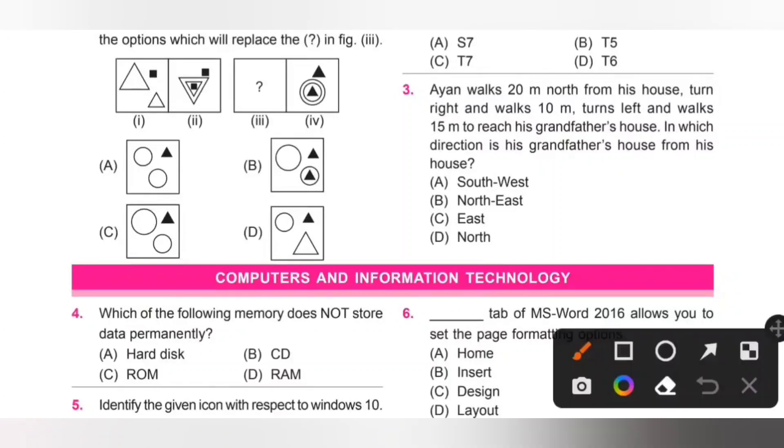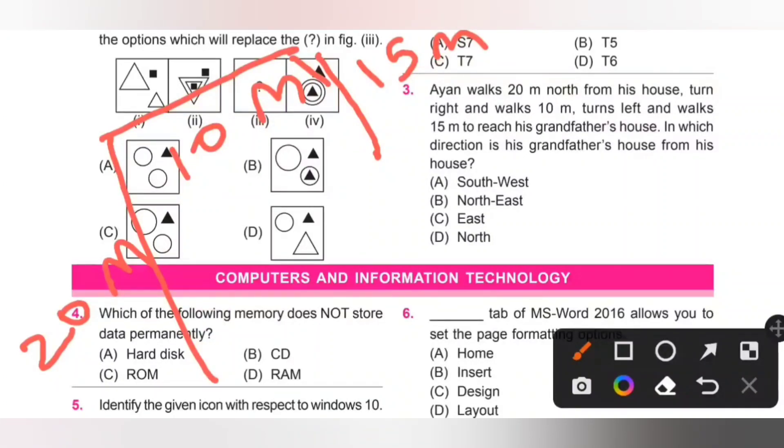Third one: Ayan walks 20 meters north from his house, turns right and walks 10 meters, turns left and walks 15 meters. In which direction is his grandmother's house from his house? We need to find the direction. Actually, his grandmother's house is at northeast. Option B is the correct answer.